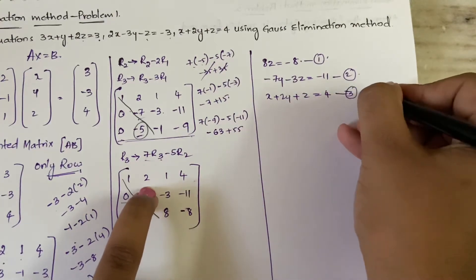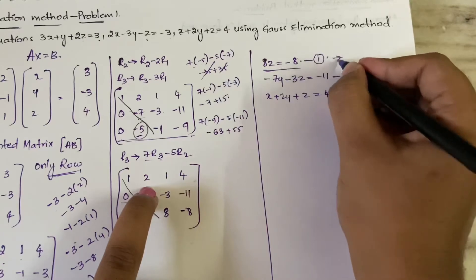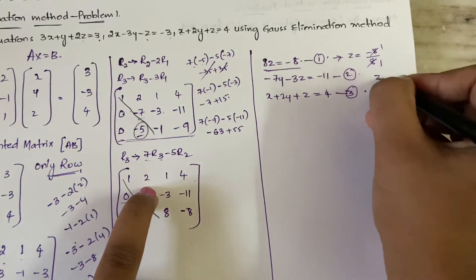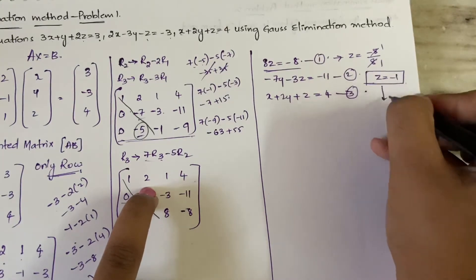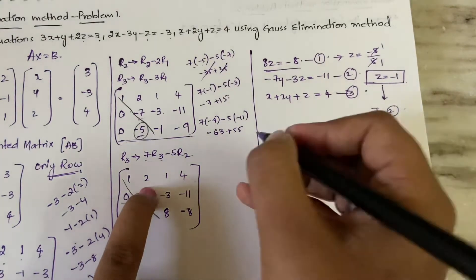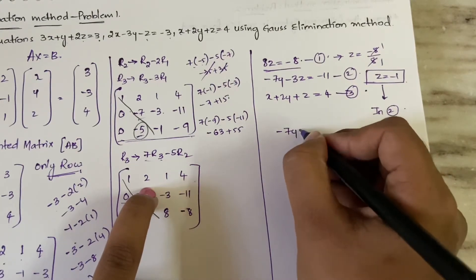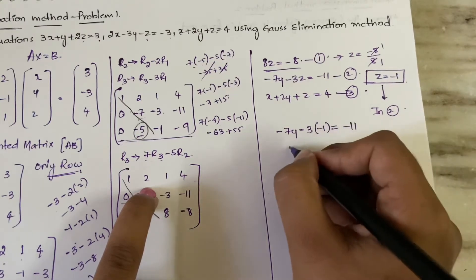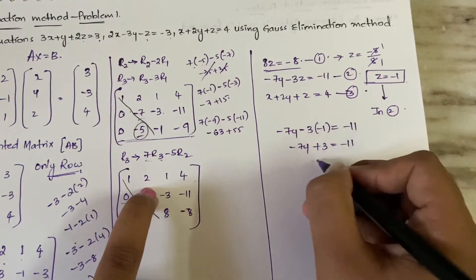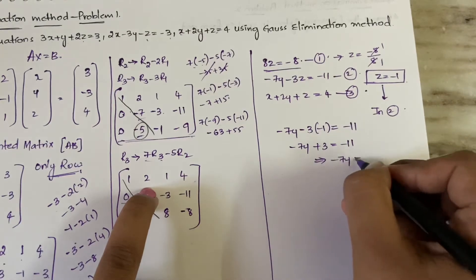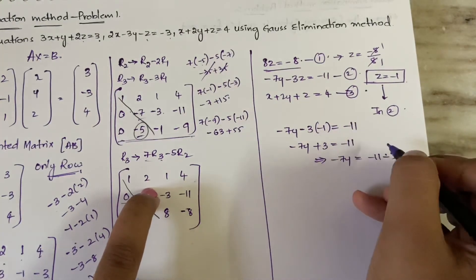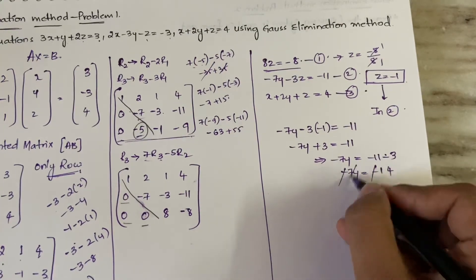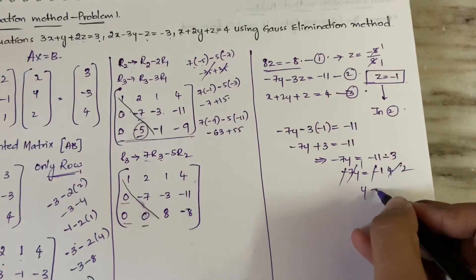From equation 1: z = -8/8 = -1, so z = -1. Substitute z = -1 into equation 2: -7y - 3×(-1) = -11, which gives -7y + 3 = -11, so -7y = -11 - 3 = -14, therefore y = 2. We've found y = 2.